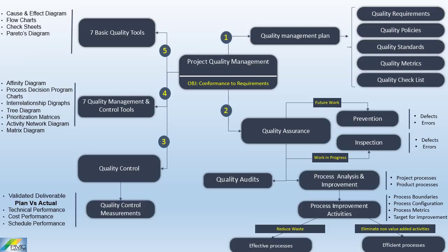Flow charts are a kind of process maps used to display the sequence of steps and branching possibilities that exist for a process. Check sheets are used to gather data and present this data in a histogram to identify causes of problems. Pareto's diagram is a histogram ordered by frequency of occurrence to show how many results were generated by each identified cause. Histogram is a special form of bar chart used to describe the central tendency, dispersion and shape of a statistical distribution.